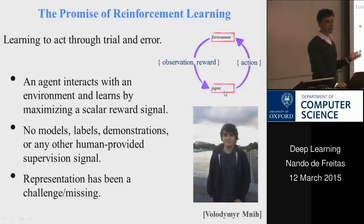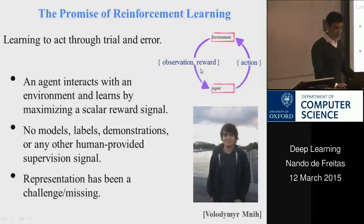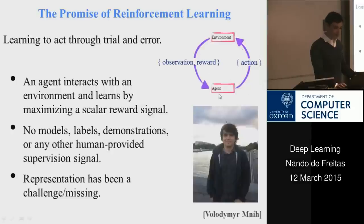Think of playing the stock market: unless you're very rich, your actions won't influence the market. You act to maximize returns, observing news articles and other signals to make decisions. You have to make decisions, sense the environment, and have some measure of performance — that's the decision loop.